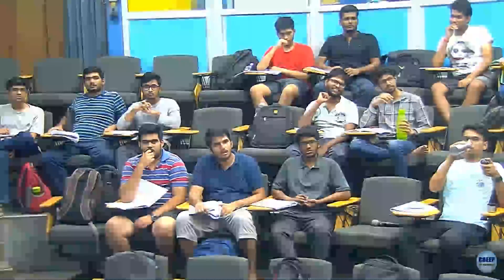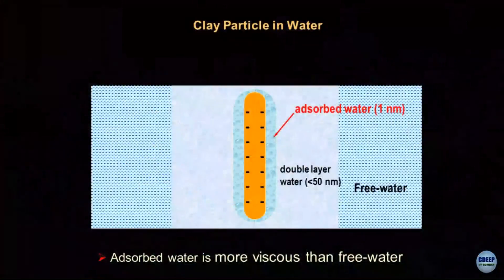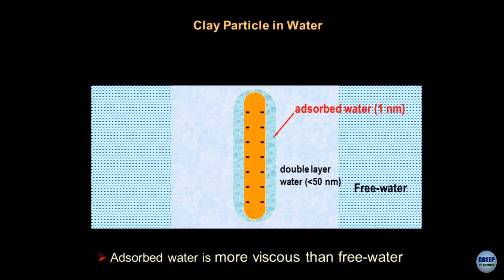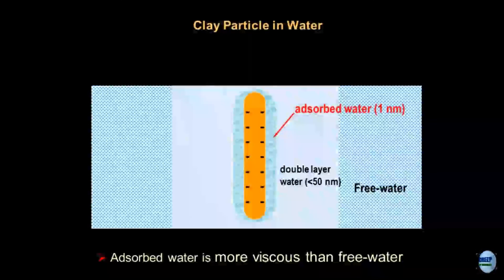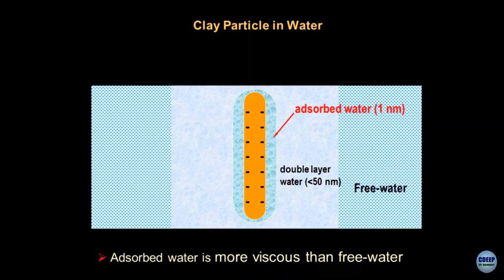The double layer thickness is less than 50 nanometers — this is very empirical, so do not go by these figures. It will depend on the concentration of cations and their valency. I may modulate these layers by increasing the concentration and type of cations used. A quick answer at third year classroom level is that these are tentative numbers and they may change.